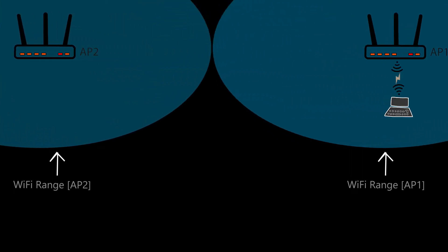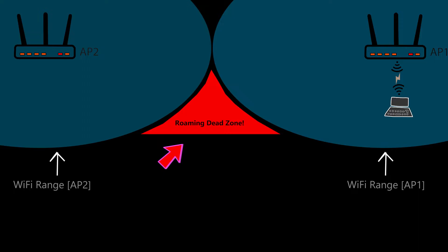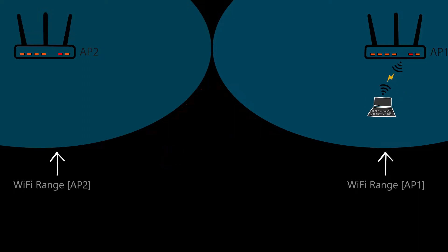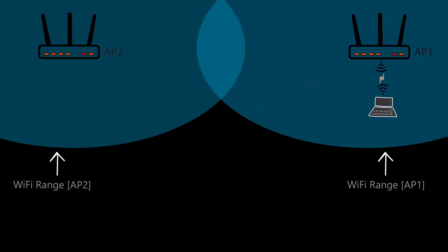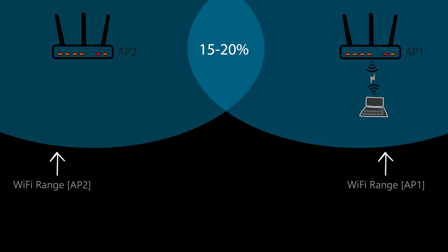Now if the access points are too far from each other, we're going to have a roaming dead zone, which is not good because the client will lose its connection when it gets there. That's why it is recommended to make sure there is a 15 to 20% overlap between the wireless networks, which should work best for seamless roaming.